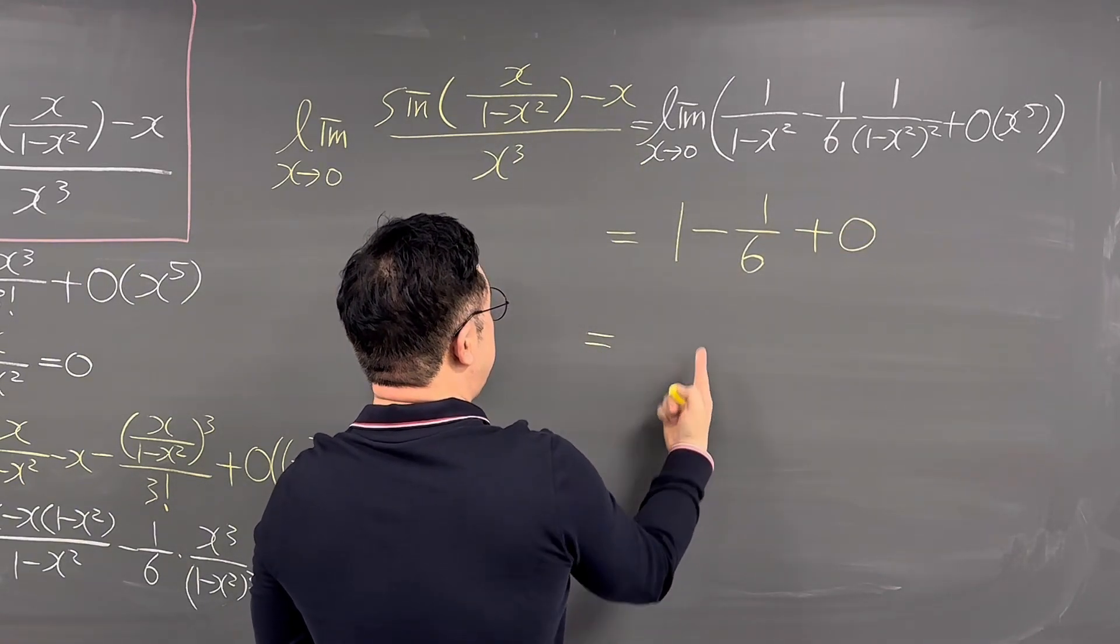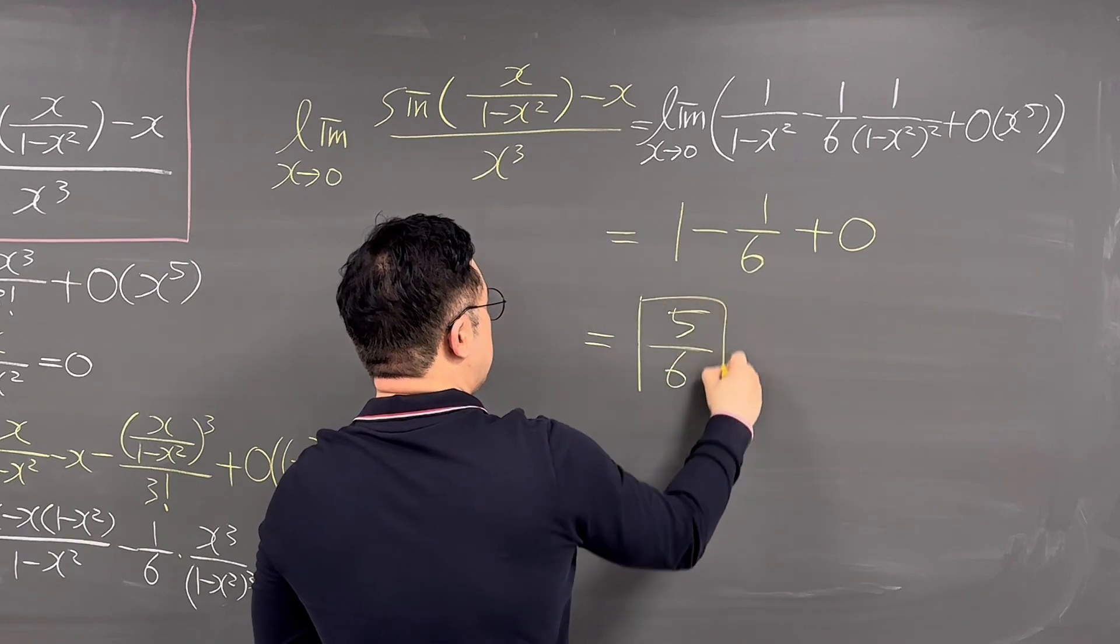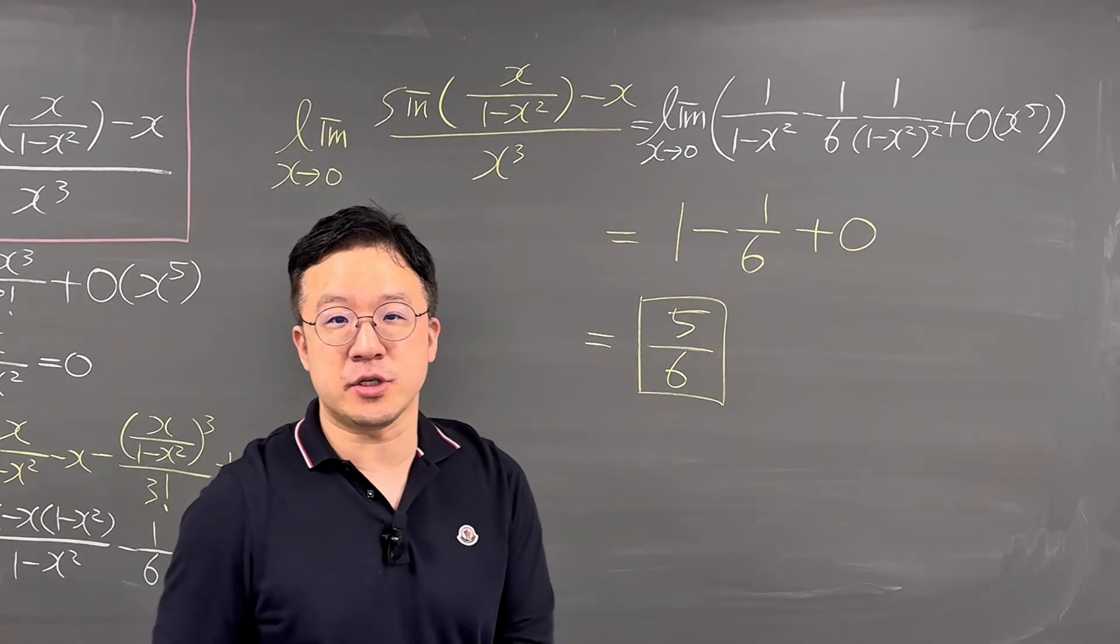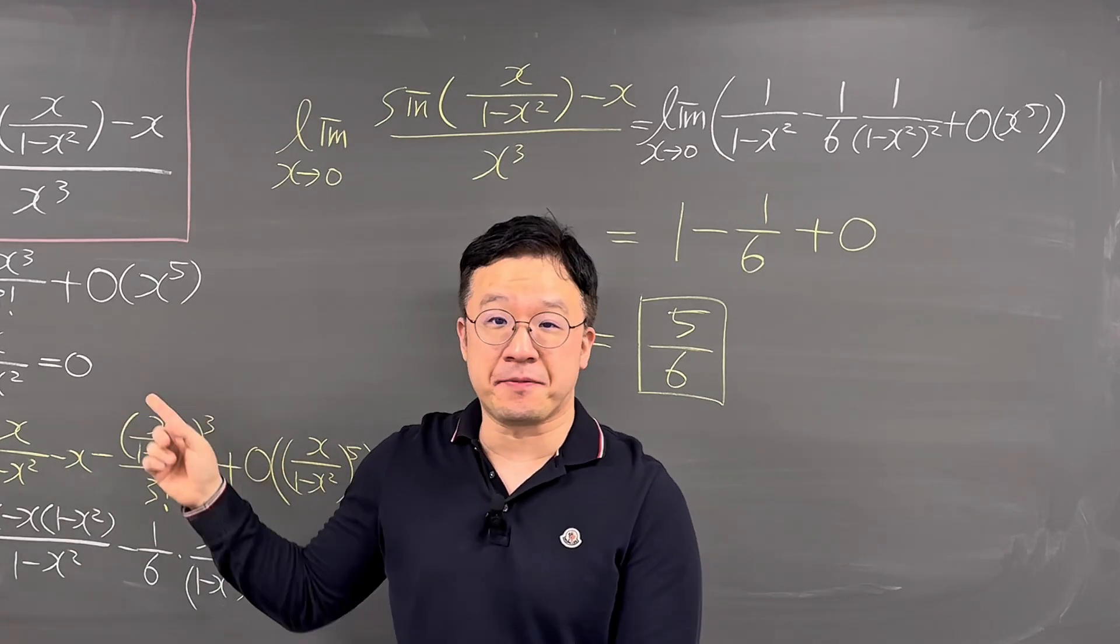So the answer for this question is 1 minus 1 over 6, that is 5 over 6. Okay, this is the answer for the question. Okay, so pretty interesting limit question using Taylor's series of sine of X.